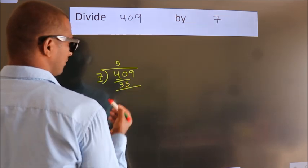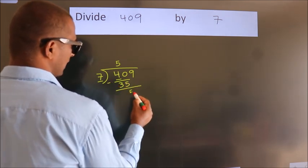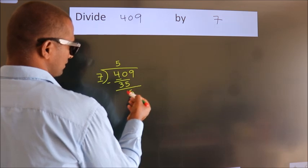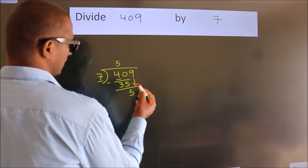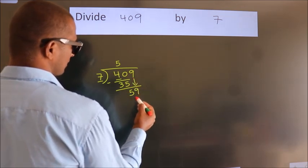Now we should subtract. We get 5. After this, bring down the beside number. So 9 down. So 59.